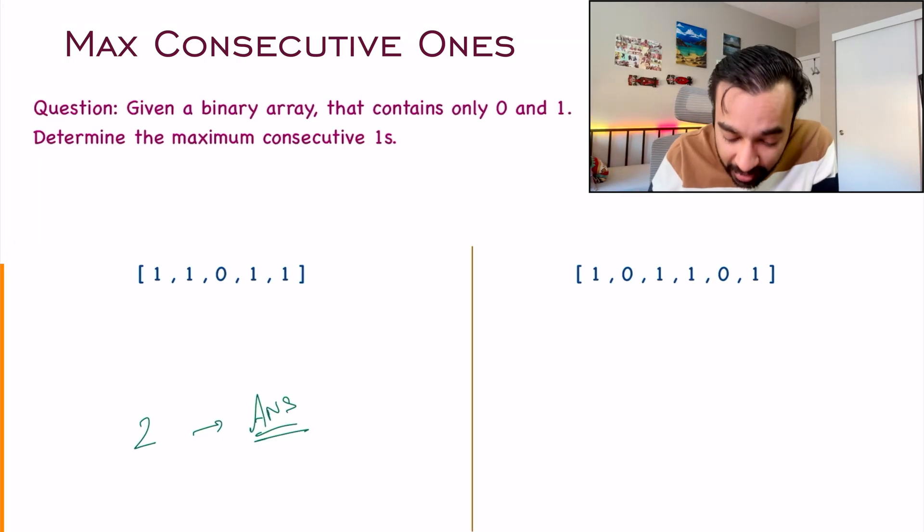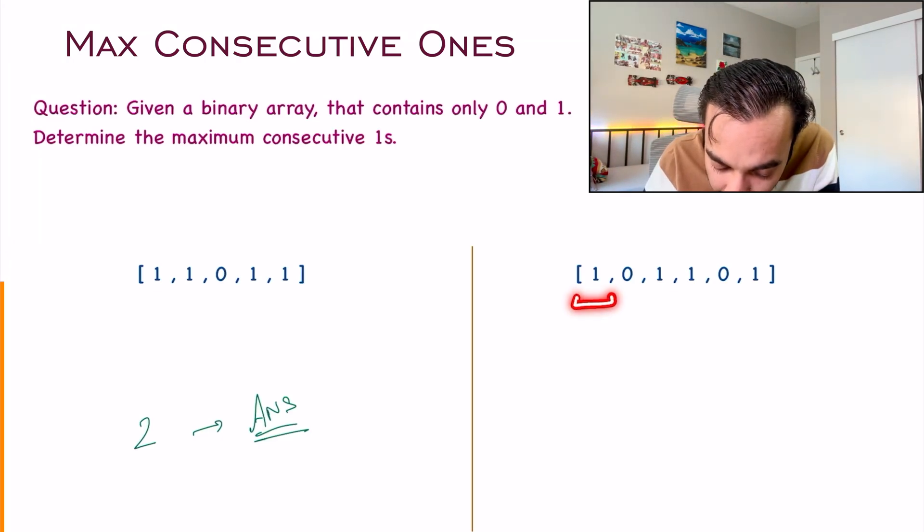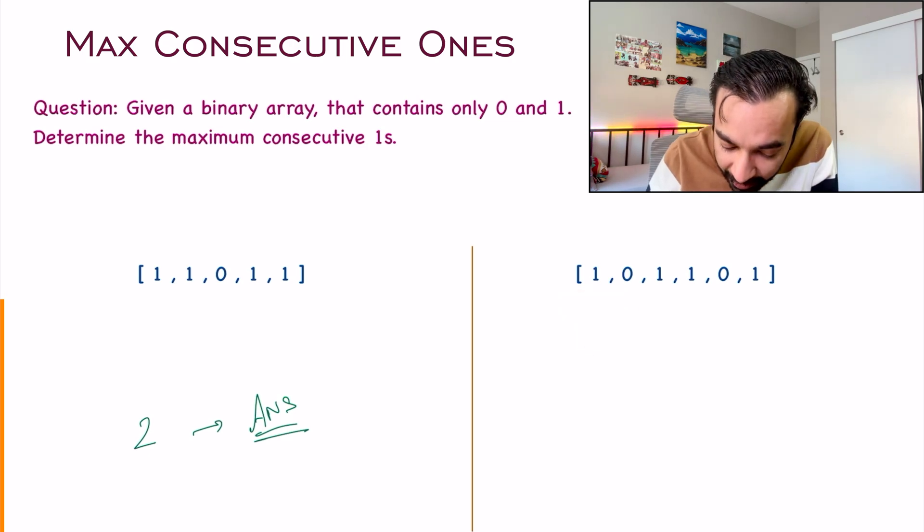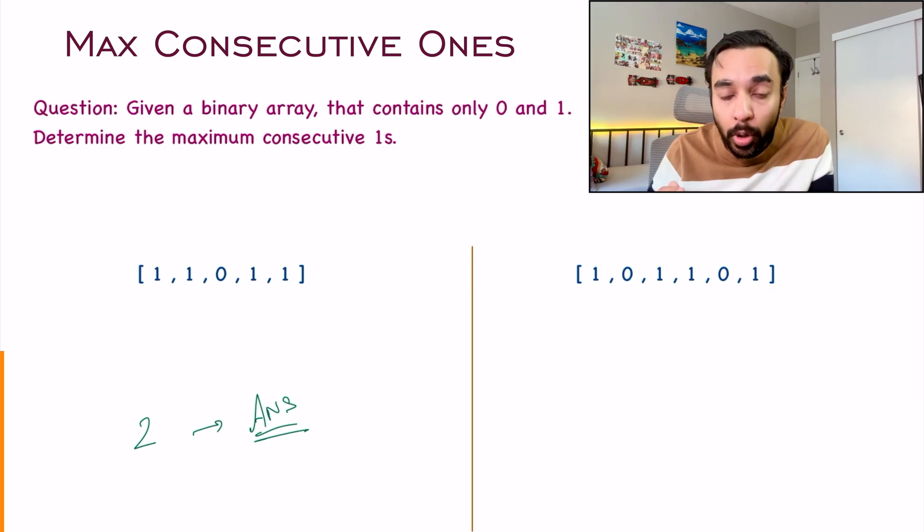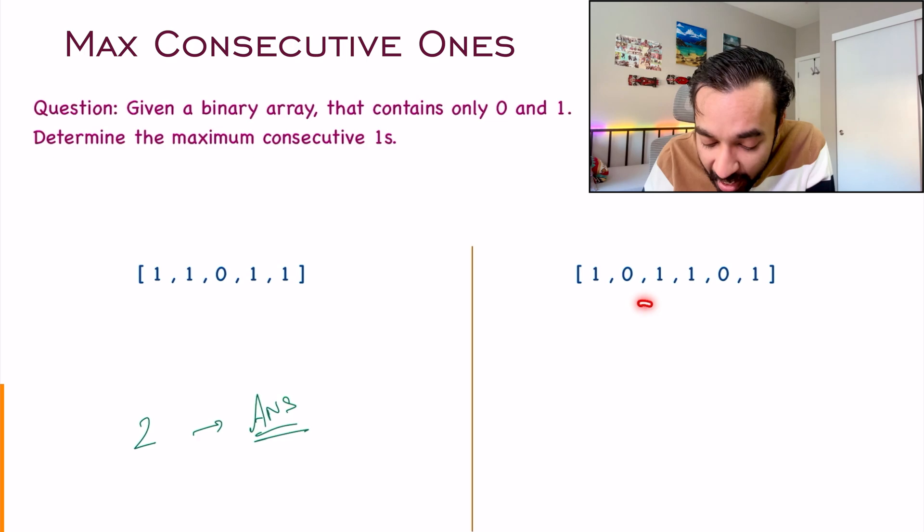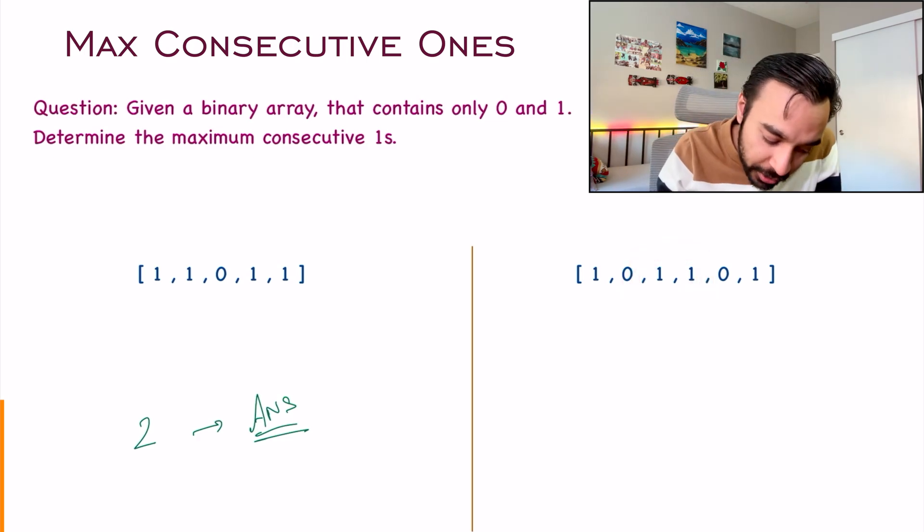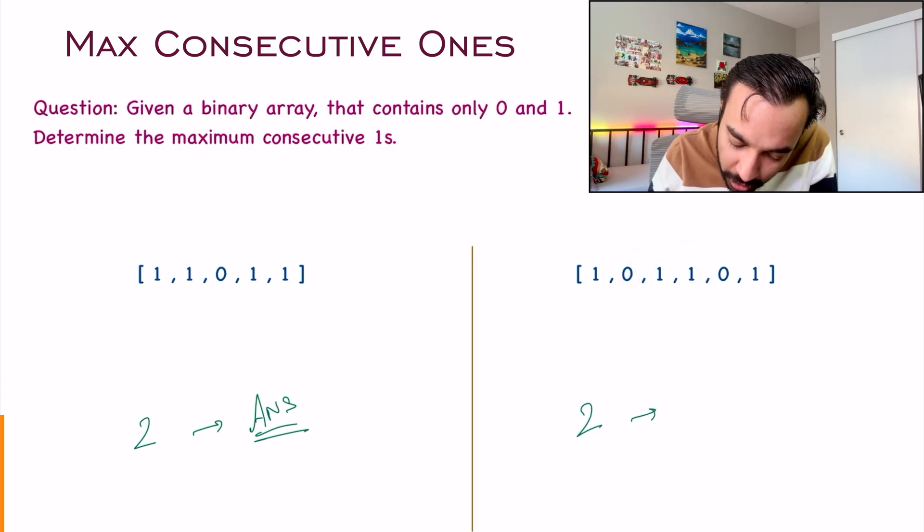Similarly, for our second test case, if you notice, I have one one over here and then I have two consecutive ones over here and then I have one one over here. So what are the maximum number of consecutive ones you can find? They are two again, right? So for this test case, also two is your answer.